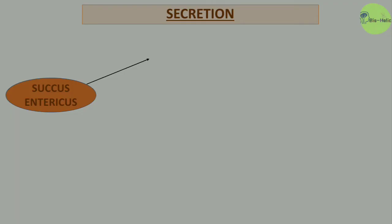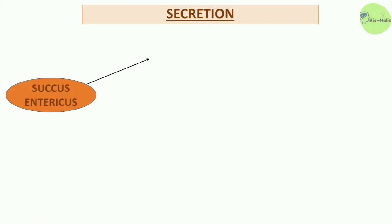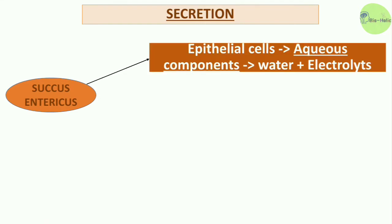The small intestinal juice is known as succus entericus. The epithelial cells of the small intestine secrete an aqueous component consisting of water and electrolytes. This watery secretion provides a solvent into which the products of digestion are dissolved.